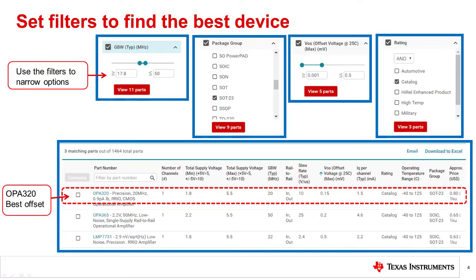At this point, we can continue to select filters to narrow down our options. First, we can put an upper limit of 50 MHz on the bandwidth. We do this because bandwidth beyond 50 MHz is probably overkill for this design. Next, let's choose a package style. In this case, we use SOT 23.